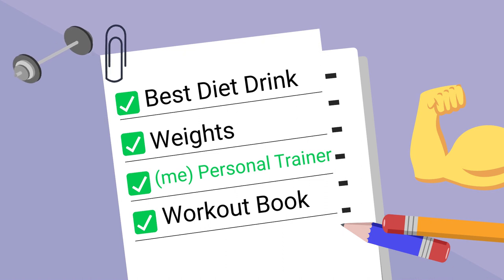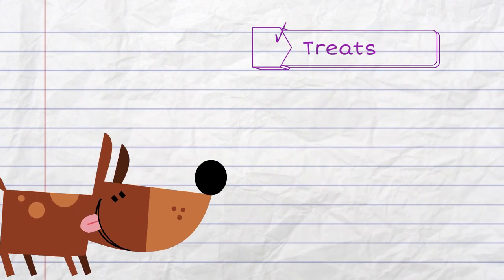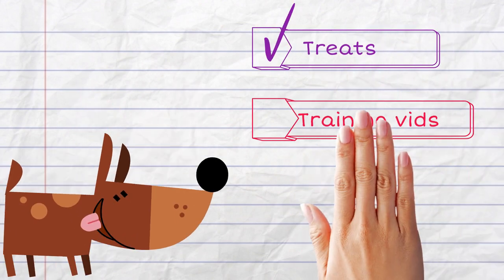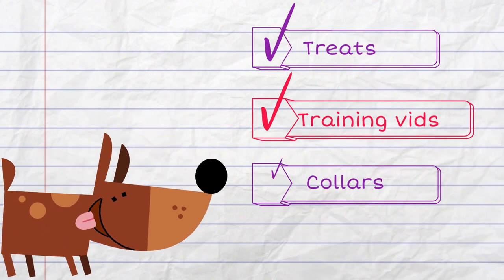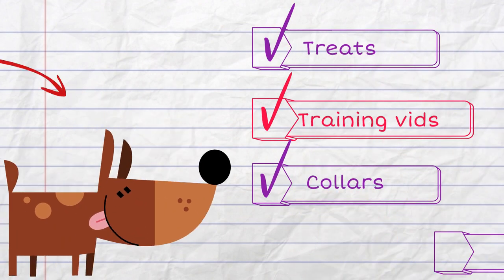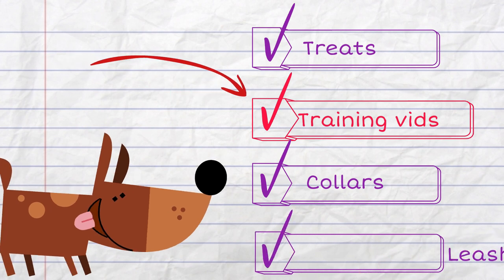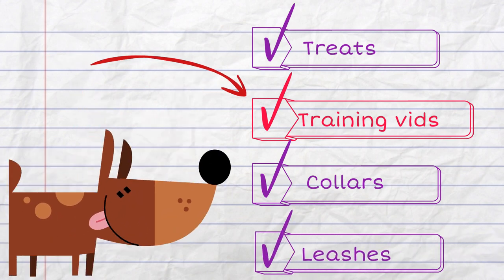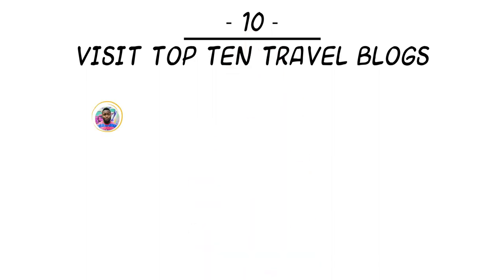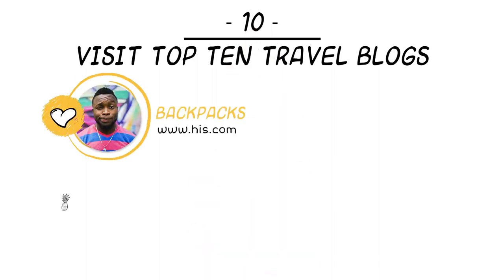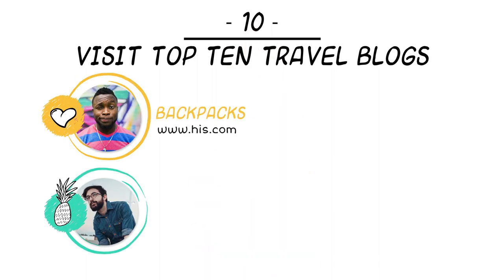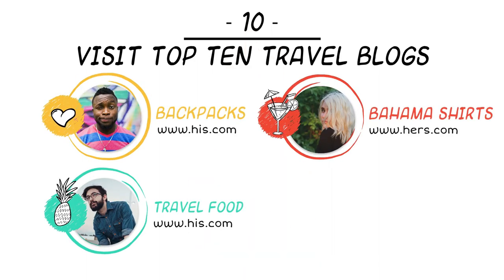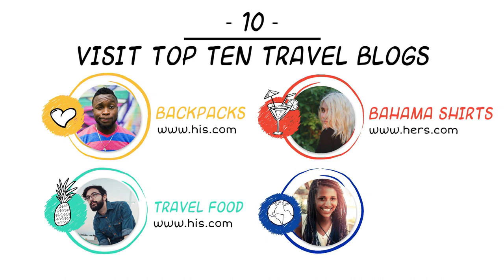For example, if you walk or train dogs, you can create a top 10 list of the products needed for training. And then make sure you insert one of your own training videos into the list. Or you can name top 10 websites that your customers may need that enhance your services — and of course, you can add your own website into the list.